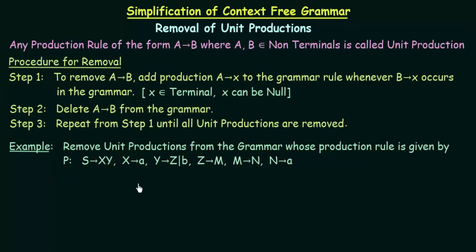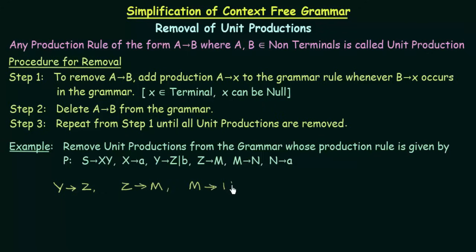First, let us see what the unit productions are in this grammar. The unit productions we have are: Y gives Z, Z gives M, and M gives N. These three productions are of the form A gives B where both A and B are non-terminal symbols, so these are the three unit productions in our grammar.